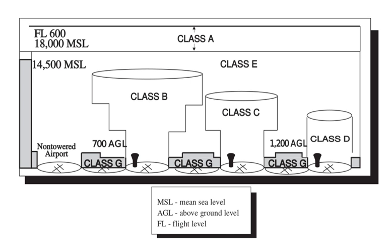Alert areas are depicted on aeronautical charts with an 'A' followed by a number to inform non-participating pilots of areas that may contain a high volume of pilot training or an unusual type of aerial activity. Pilots should exercise caution in alert areas. All activity within an alert area shall be conducted in accordance with regulations, without waiver, and pilots of participating aircraft as well as pilots transiting the area shall be equally responsible for collision avoidance.